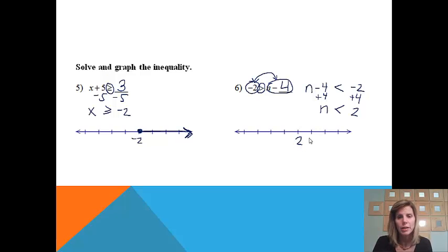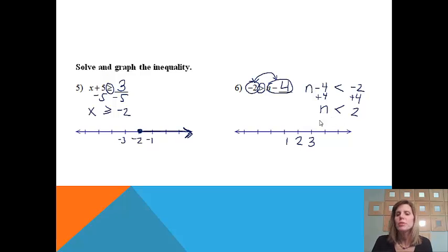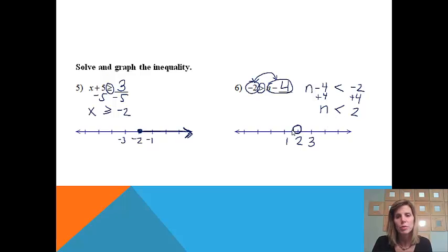Now we're ready to graph it to show all the answers that work. We put 2 on the number line with numbers on either side. There's no equal sign, which means we don't get to include 2 — it's an open circle. All numbers less than 2 work, which are all the numbers to the left. If you check the two arrows, they match each other.